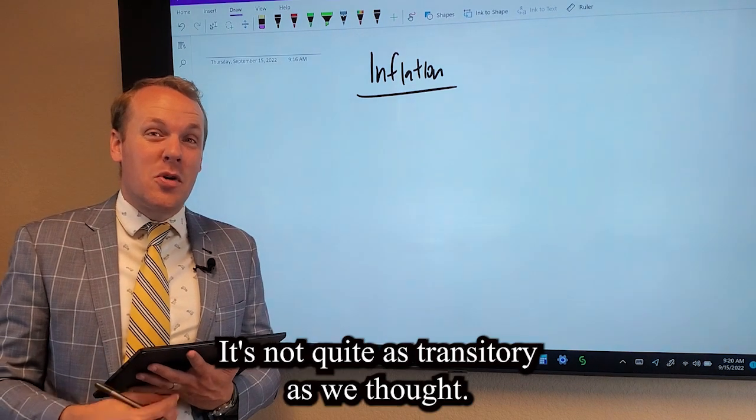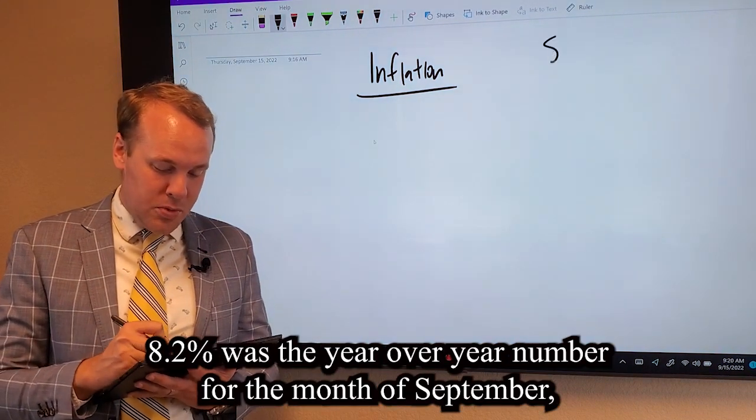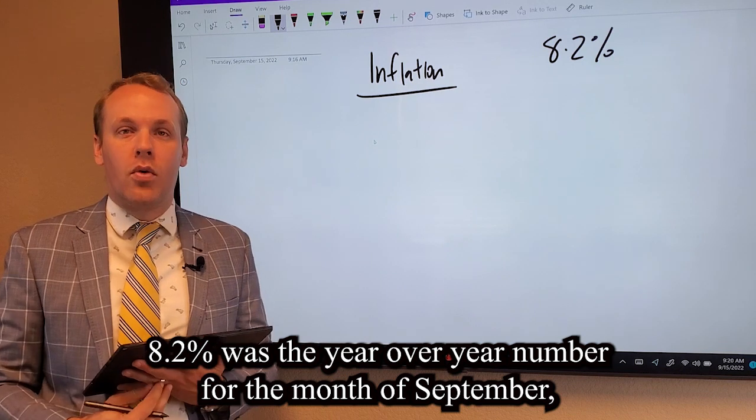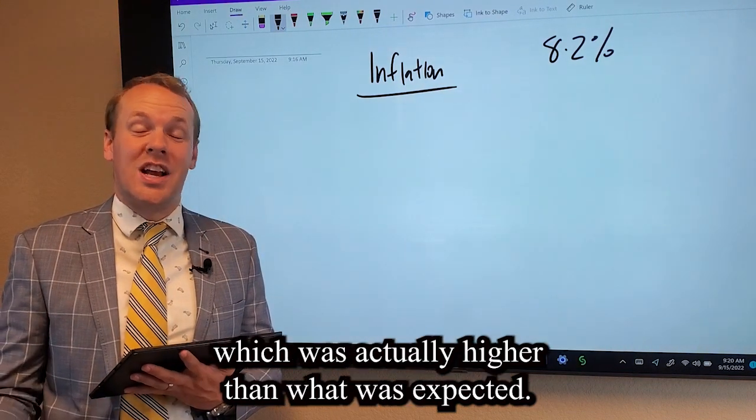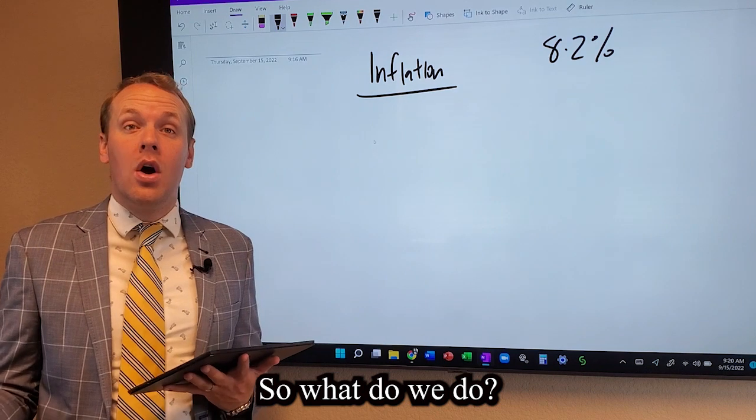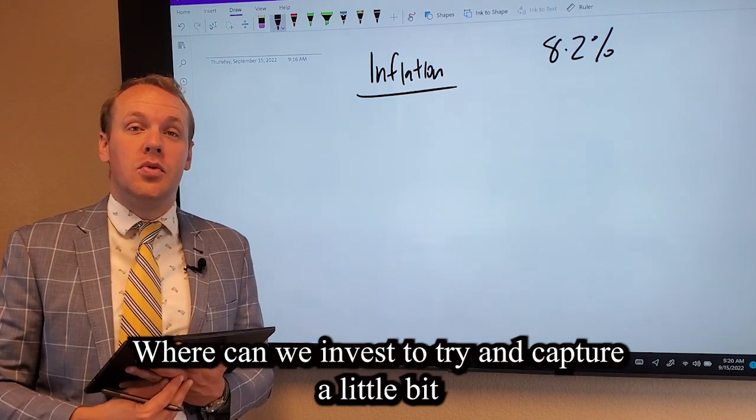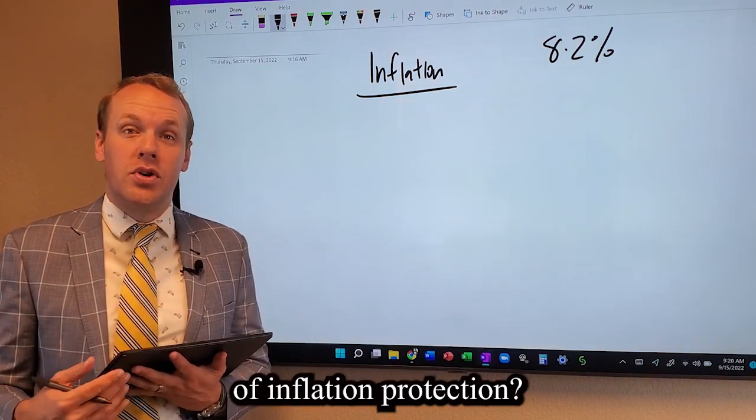It's not quite as transitory as we thought. 8.2% was the year over year number for the month of September, which was actually higher than expected. So what do we do? Where can we invest to try and capture a little bit of inflation protection?